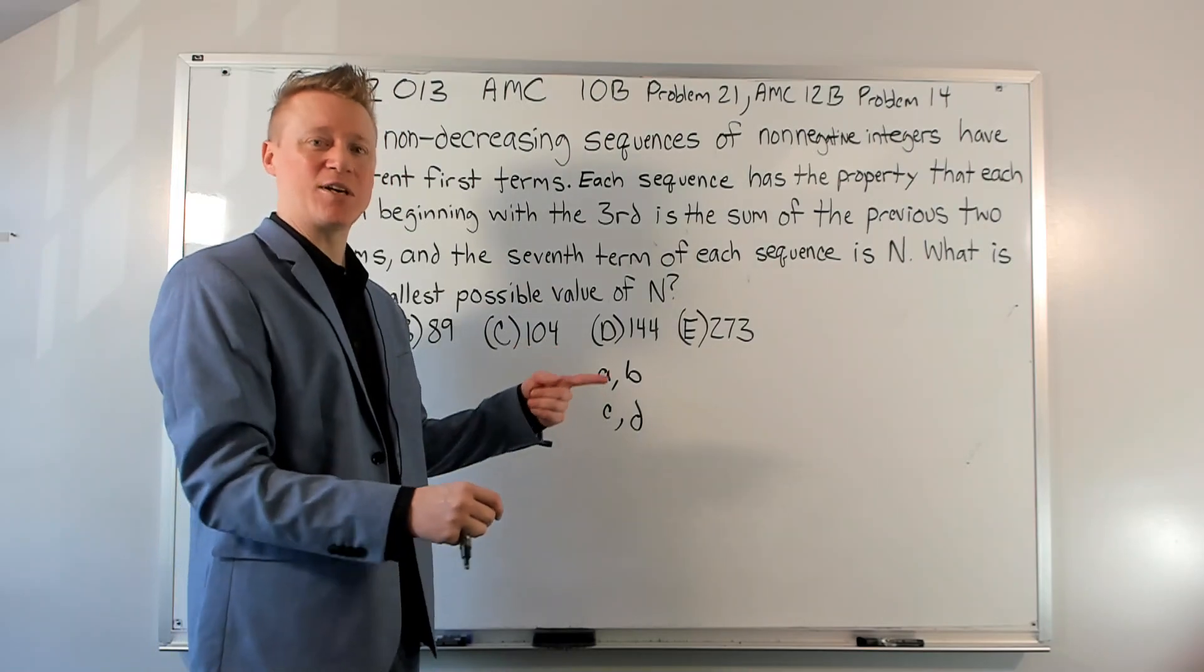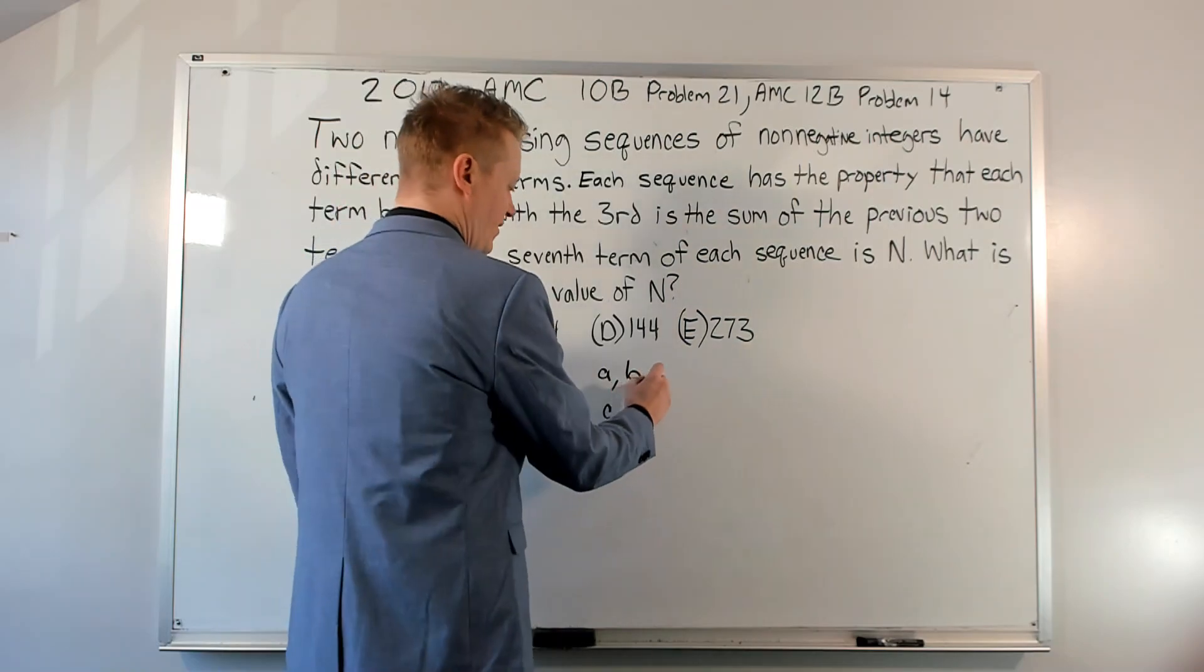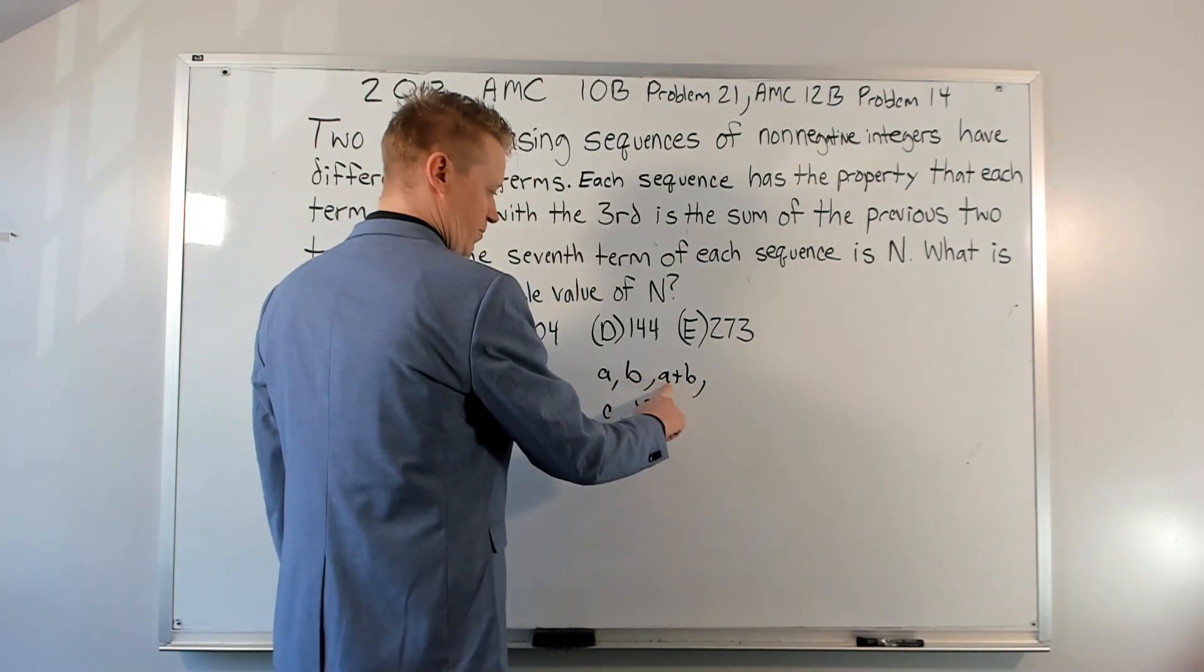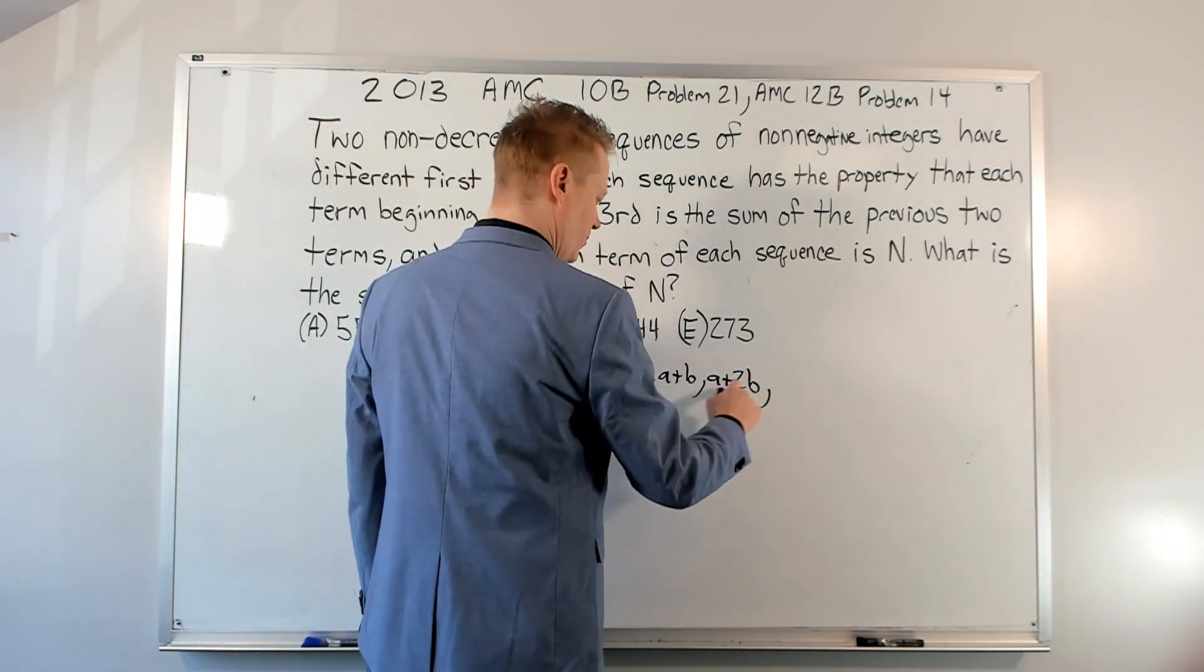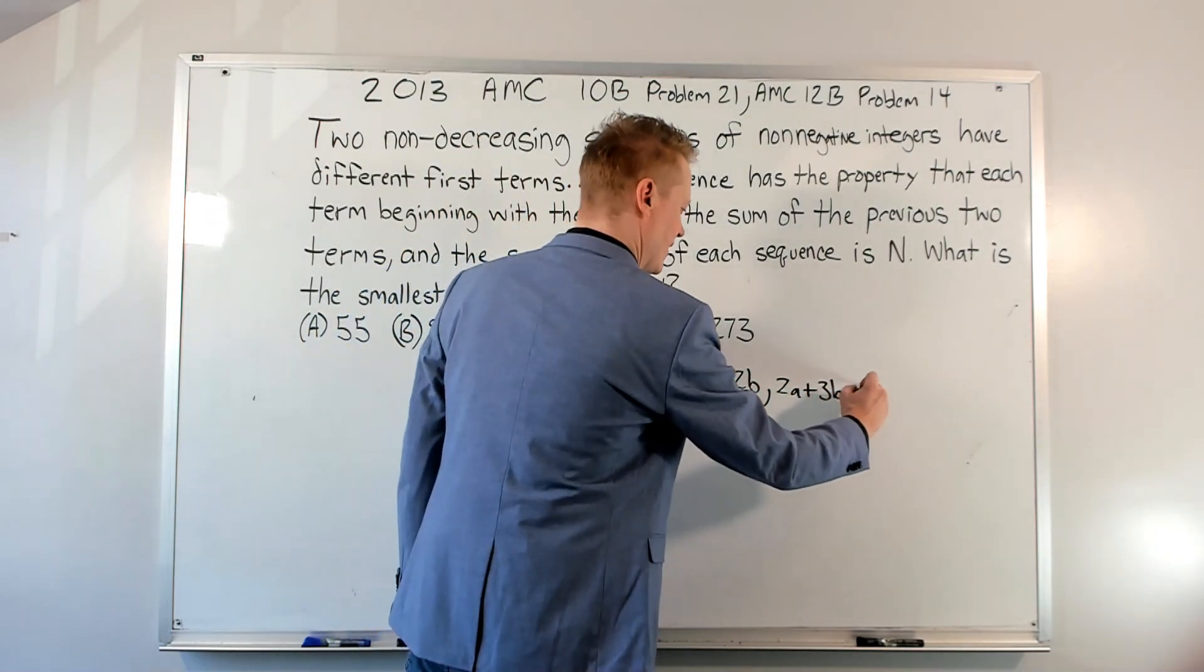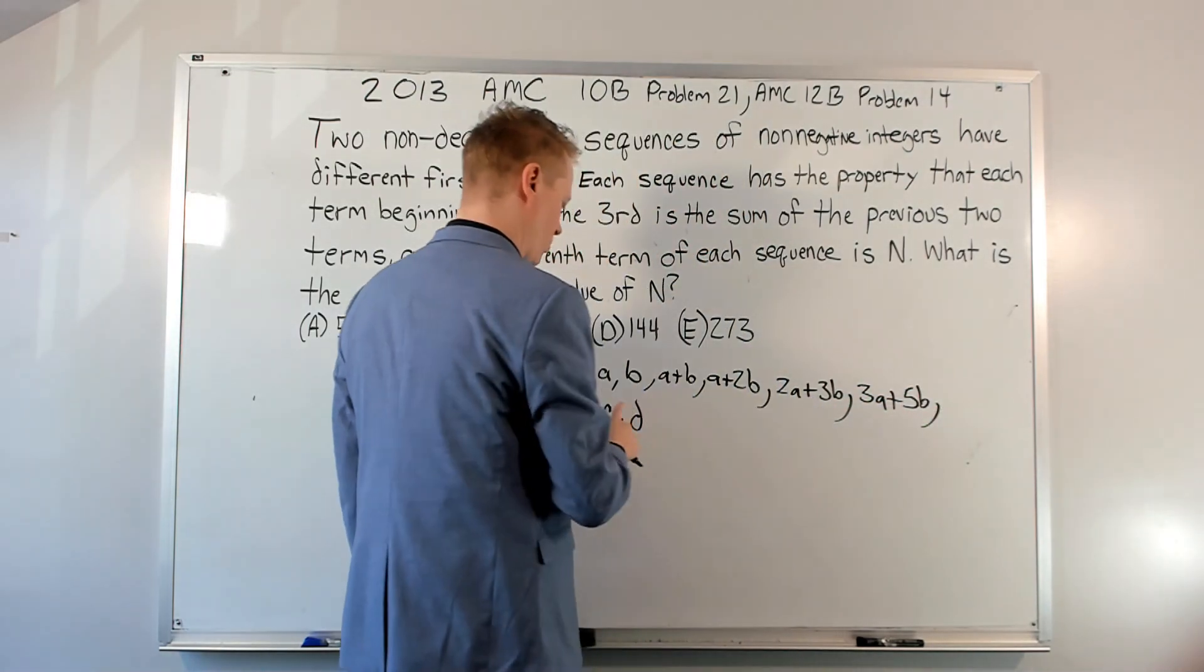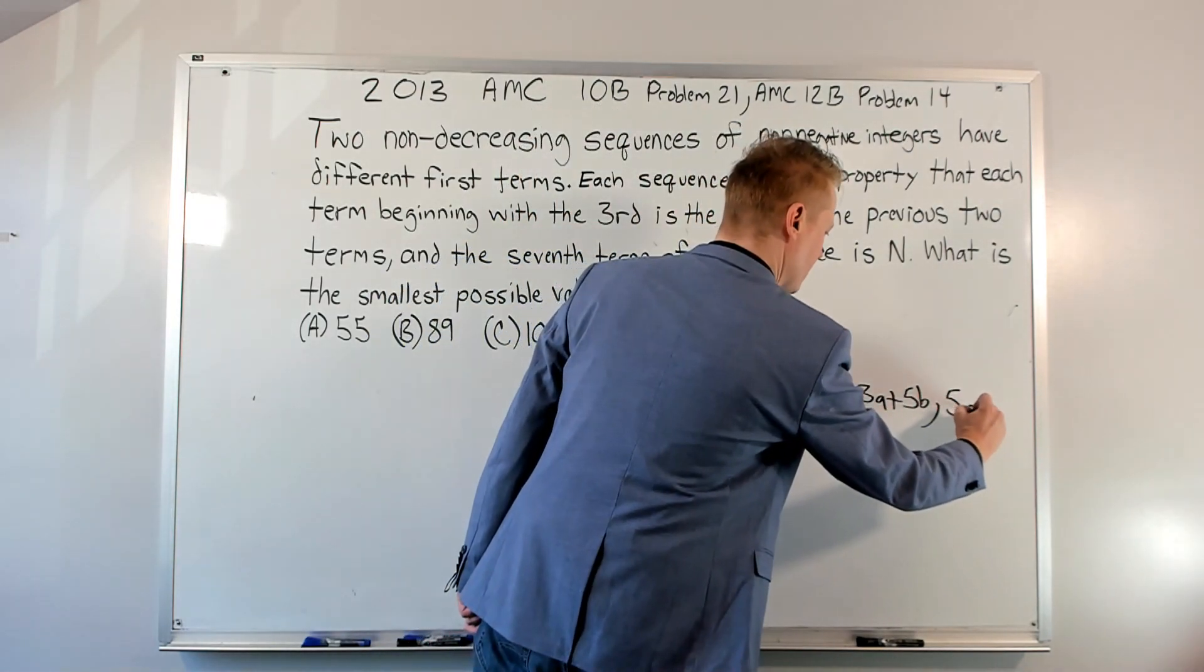What if, right? We call this what if. What if the first term is A and the second term is B? Let's progress. Then this will be A plus B. This will now be this term plus this term is A plus 2B. This one will be these two added together is 2A plus 3B. These two added together is 3A plus 5B. One, two, three, four, five, six. We need one more. 5A plus 8B. Okay, so we've got that.